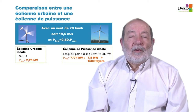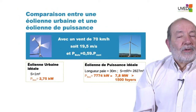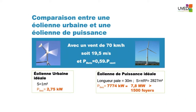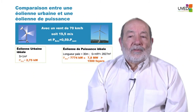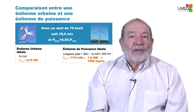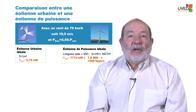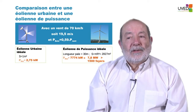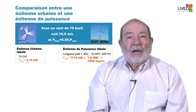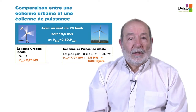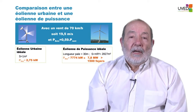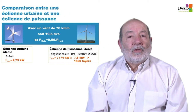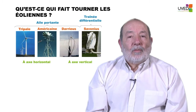Now let's compare an urban windmill with a large power windmill. For a wind at 70 kilometers per hour, we calculate Betz's power assuming both windmills are perfect. The urban windmill with one square meter of surface could recover 2.75 kilowatts. If we have a big power windmill with a 30-meter-long blade, we would have 7.8 megawatts of power — enough to supply power to more than 1,500 houses.